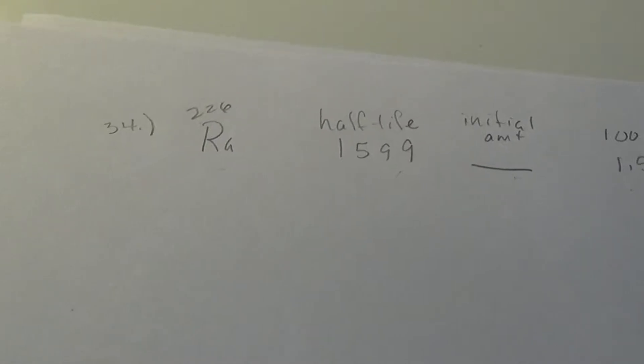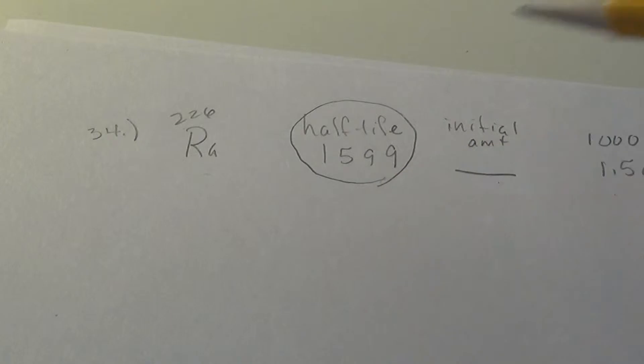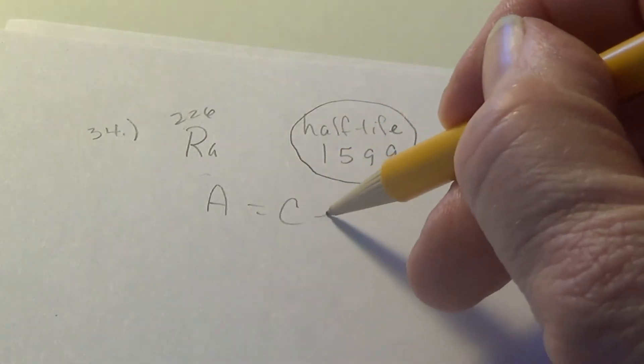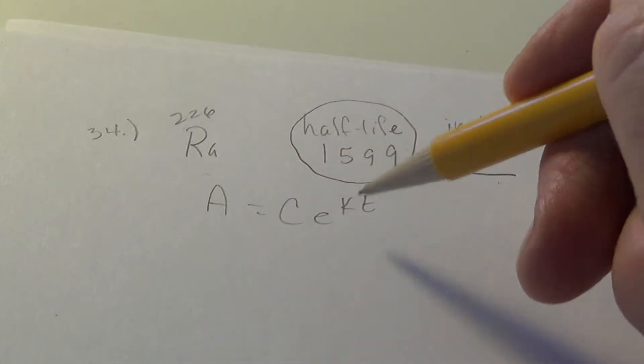So we're going to start this with the information that is most potent and has the most information hidden in it, and that is that. So I'm going to make a statement. We're going to start with our formula and feed in the information from that into the formula.